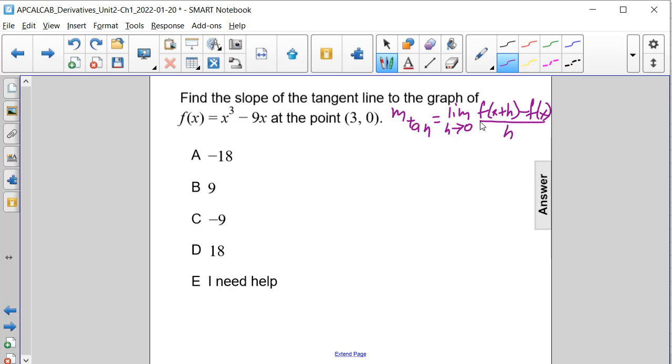So let's first start off by rewriting our formula with our x value of 3. So it's going to be equal to the limit as h approaches 0 of f of 3 plus h minus f of 3 all divided by h.